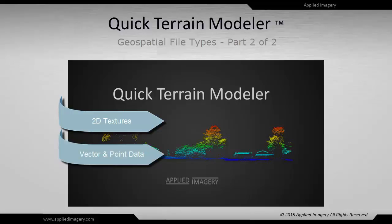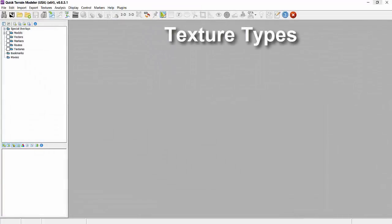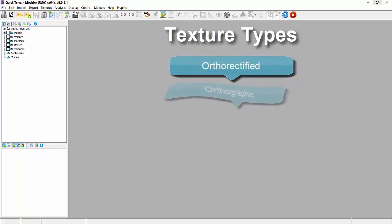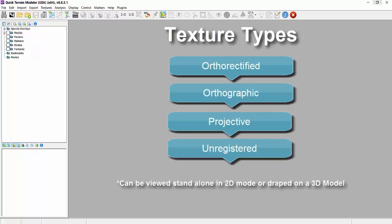We'll begin by explaining how QtModeler handles 2D data, specifically textures. Textures — QtModeler's term for an image — come in four types: orthorectified, orthographic, projective, and unregistered. These textures can be viewed alone in 2D mode or draped onto a 3D model, and may or may not have the same resolution as the model they are draped over.